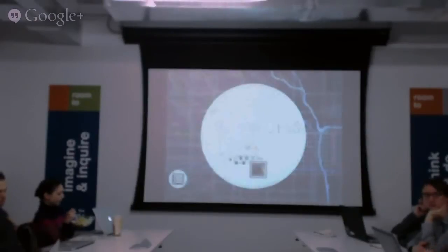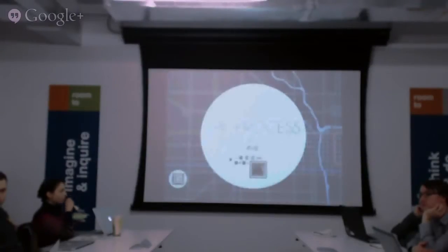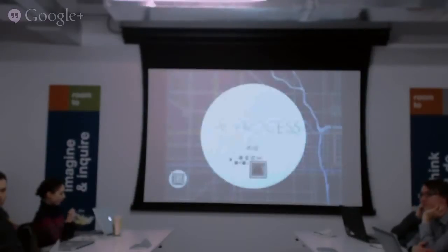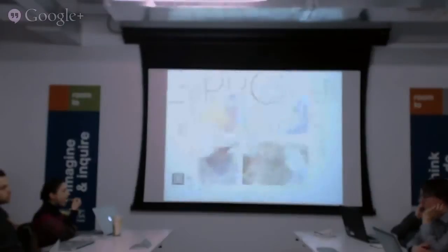A co-worker of mine at UIC — she's Chinese — and she was really interested in a map of the seven warring states. This is pre-Qin Dynasty, essentially before the first empire. So she asked if I could make something that represents that, and this is where I started.